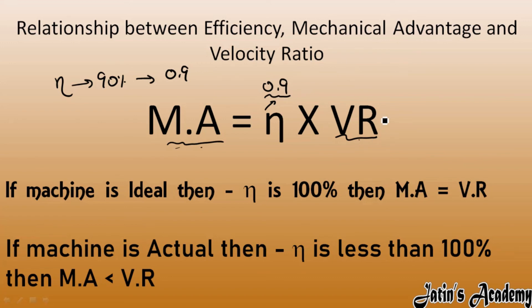When a machine changes from ideal to actual, velocity ratio does not change — only mechanical advantage is affected and will decrease. So velocity ratio remains constant, but mechanical advantage decreases for an actual machine.